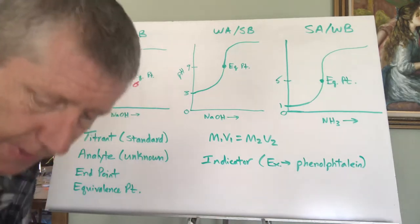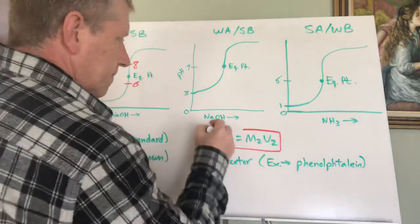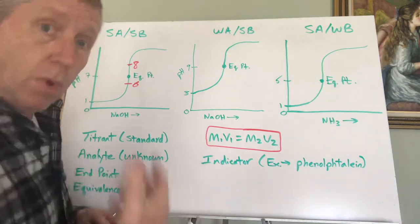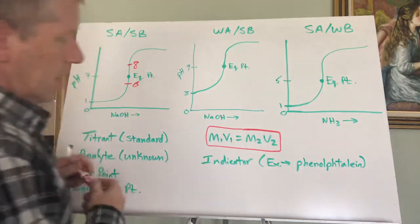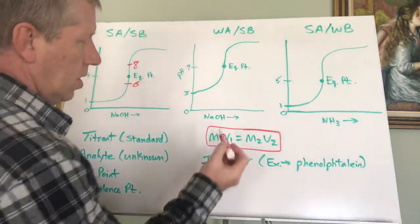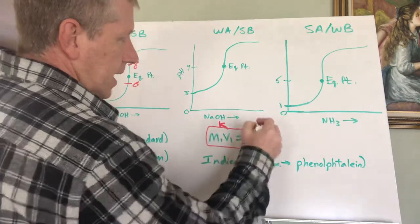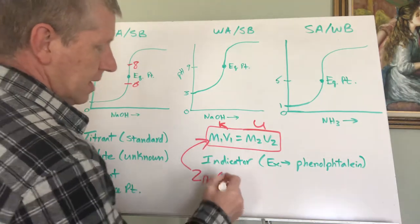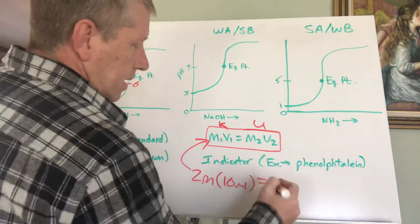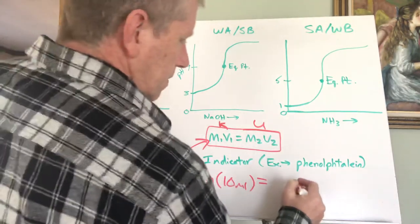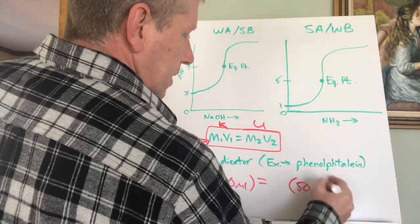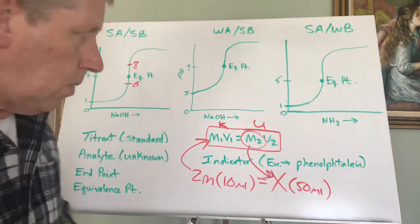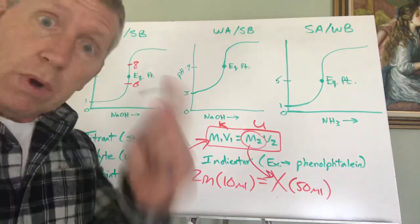Here's a useful equation for titration: M₁V₁ = M₂V₂, where M is molarity and V is volume. If you know the concentration of the known solution on one side, and you measure the volumes used, you can calculate the concentration of the unknown. For example, if you use a 2 molar solution in 10 mL, titrated into 50 mL of the unknown, you can calculate that unknown concentration. We'll go through this in more detail during this week's lab.